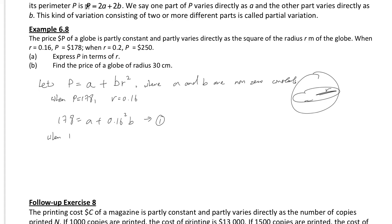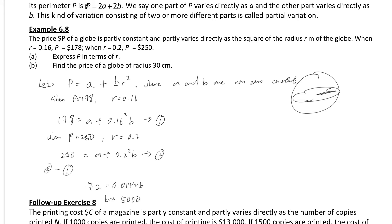We have a second equation. When P equals 250, r equals 0.2: 250 equals a plus 0.2 squared times b. Then you can use the method of elimination — equation 2 minus equation 1. Left-hand side: 250 minus 178 equals 72. a minus a equals 0, so we have 0.2 squared minus 0.16 squared times b, which equals 0.0144b.